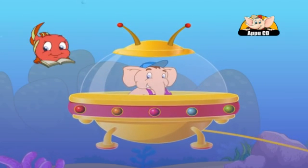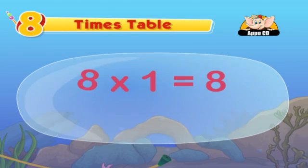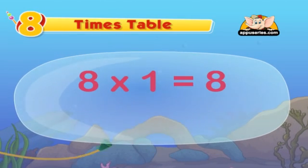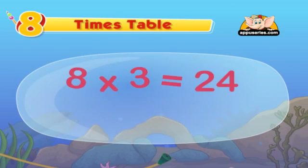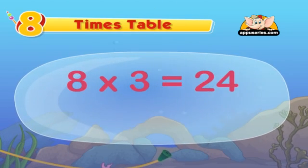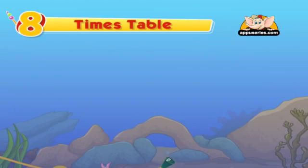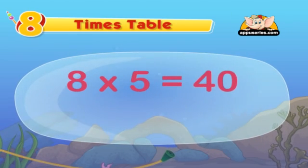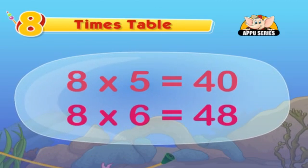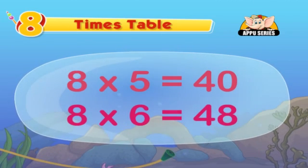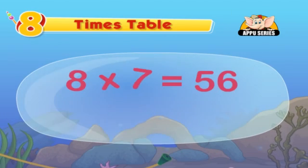You will know your table. 8 into 1 is 8. 8 2's are 16. 8 3's are 24. 8 4's are 32. 8 5's are 40. 8 6's are 48. Just sing along with me and you will know your table. 8 7's are 56.